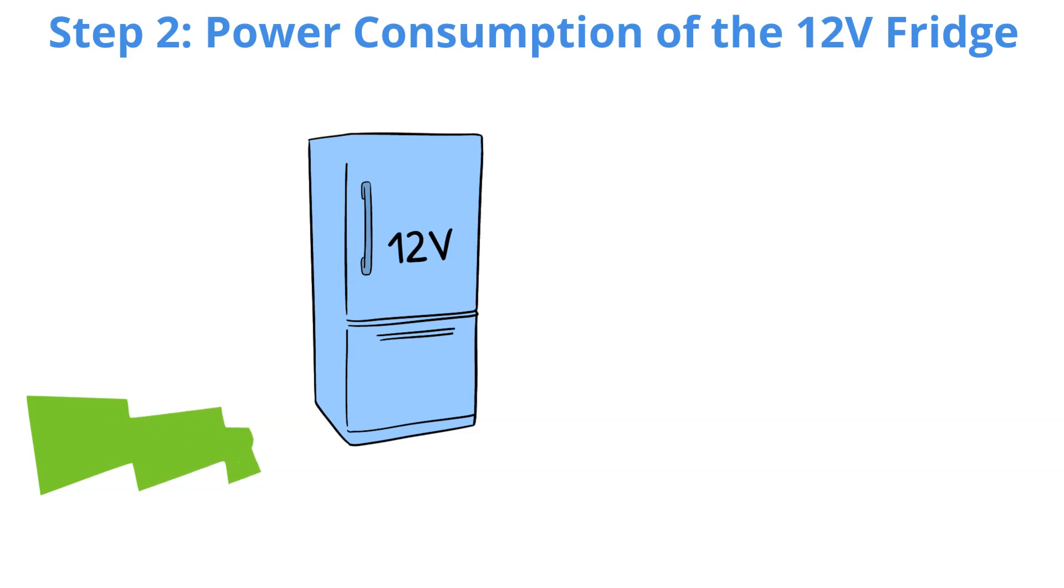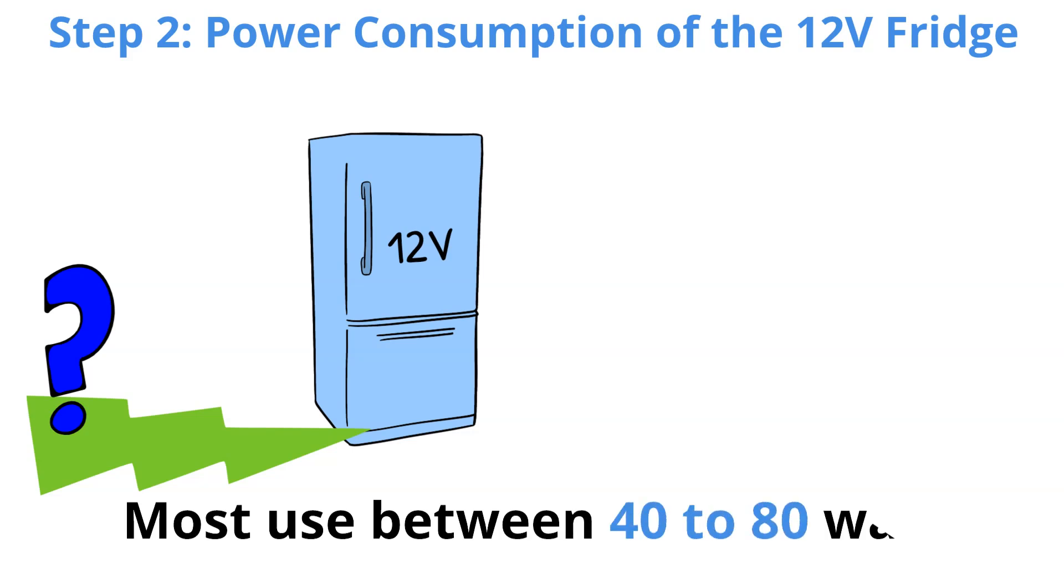Step 2: Power Consumption of the 12-volt Fridge. Next, we need to know how much power the 12-volt fridge consumes. Most portable 12-volt fridges use between 40 to 80 watts. But for this calculation, let's assume we're dealing with a fridge that consumes an average of 50 watts.